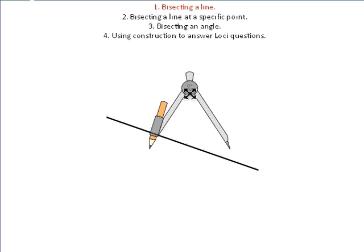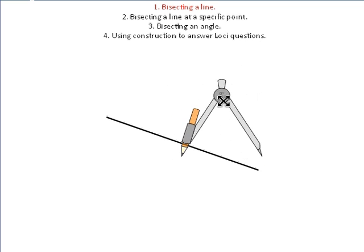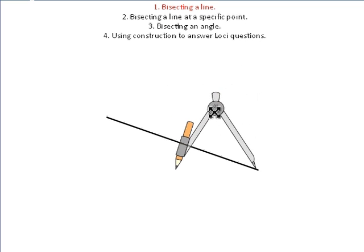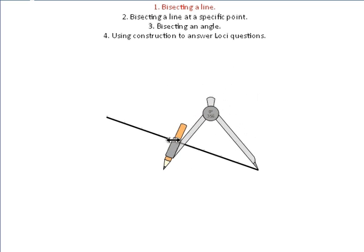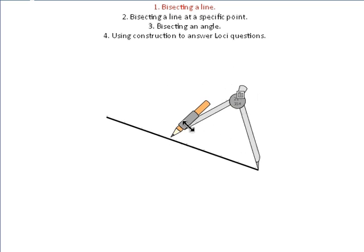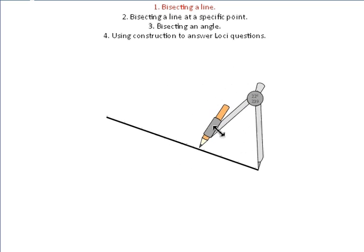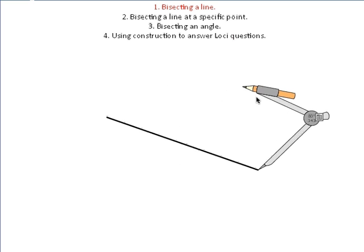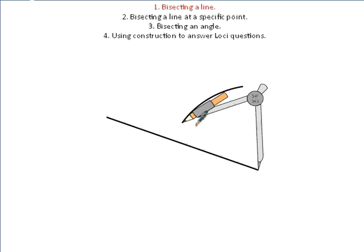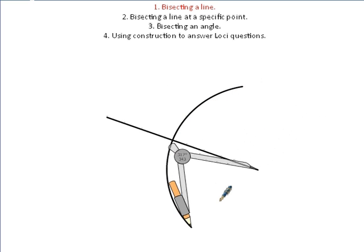To bisect a line, really simple. The sharp bit of your compass needs to go at the end of the line. You need to open your compass more than halfway along the line — it must be more than half way. Then you simply draw a curved line like this, which is called an arc.